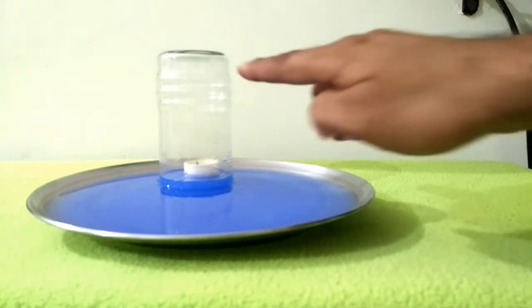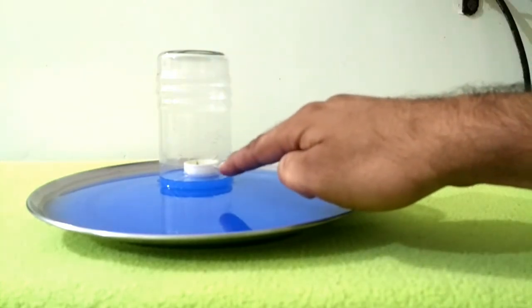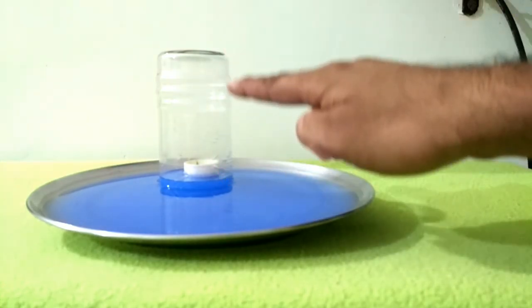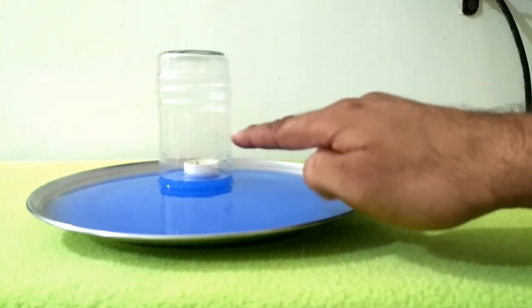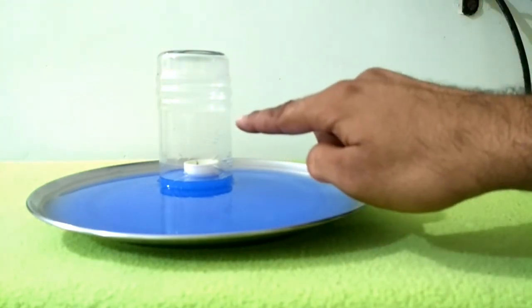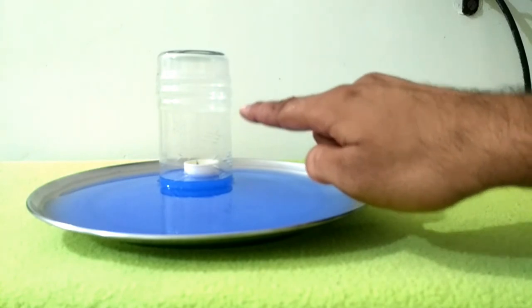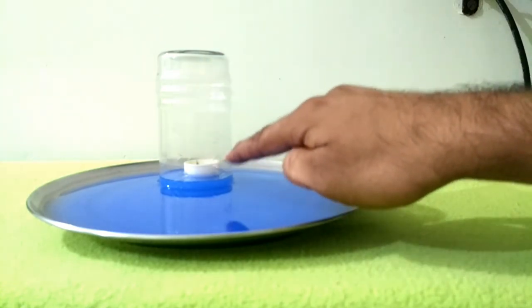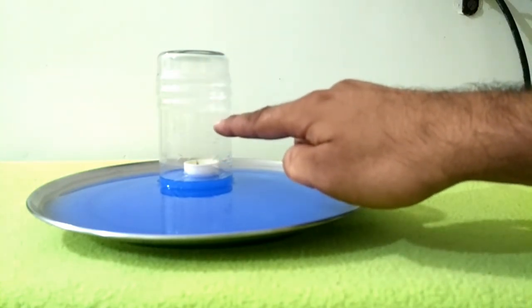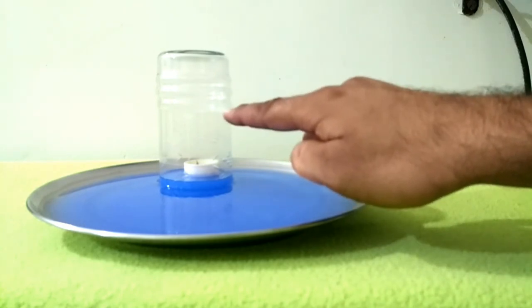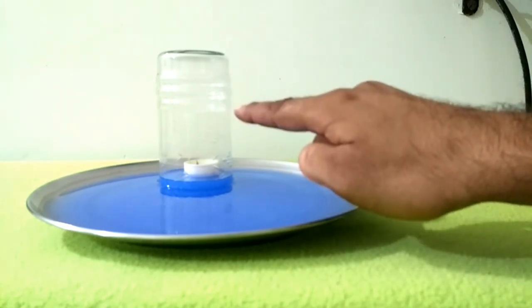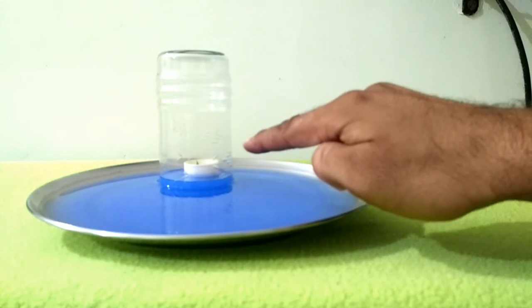The second thing: earlier, all the space inside this glass was occupied by oxygen. Once this oxygen was exhausted, a void space was created inside the glass because all the oxygen was exhausted by the lamp.